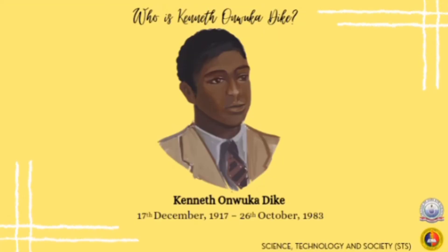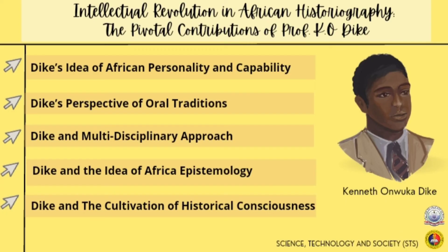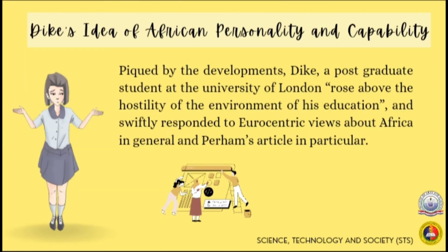Now let's talk about the perspective of Kenneth Onwuka Dike. Dike was born on December 17, 1917, and died on October 26, 1983, at the age of 66. These are the ideas and perspectives regarding African personality and capability.